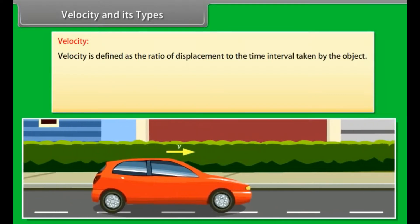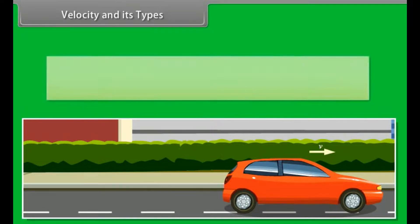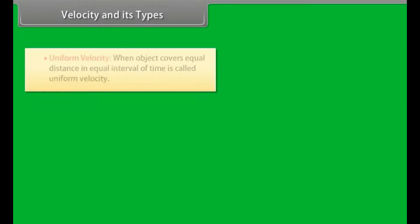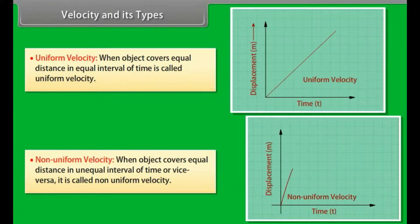Velocity and its types. Velocity: Velocity is defined as the ratio of displacement to the time interval taken by the object. Therefore, velocity is equal to displacement upon time interval. It is a vector quantity. SI unit is m/s. Dimensional formula is equal to M raised to the power 0, L raised to the power 1, T raised to the power minus 1. Uniform velocity: When object covers equal distance in equal interval of time is called uniform velocity. Non-uniform velocity: When object covers equal distance in unequal interval of time or vice versa, it is called non-uniform velocity.